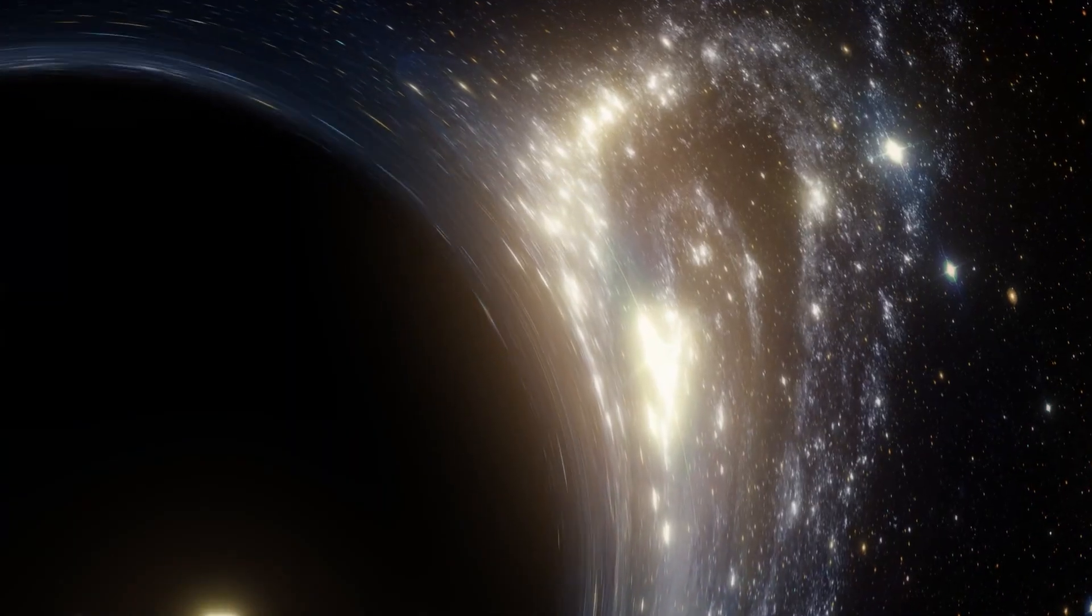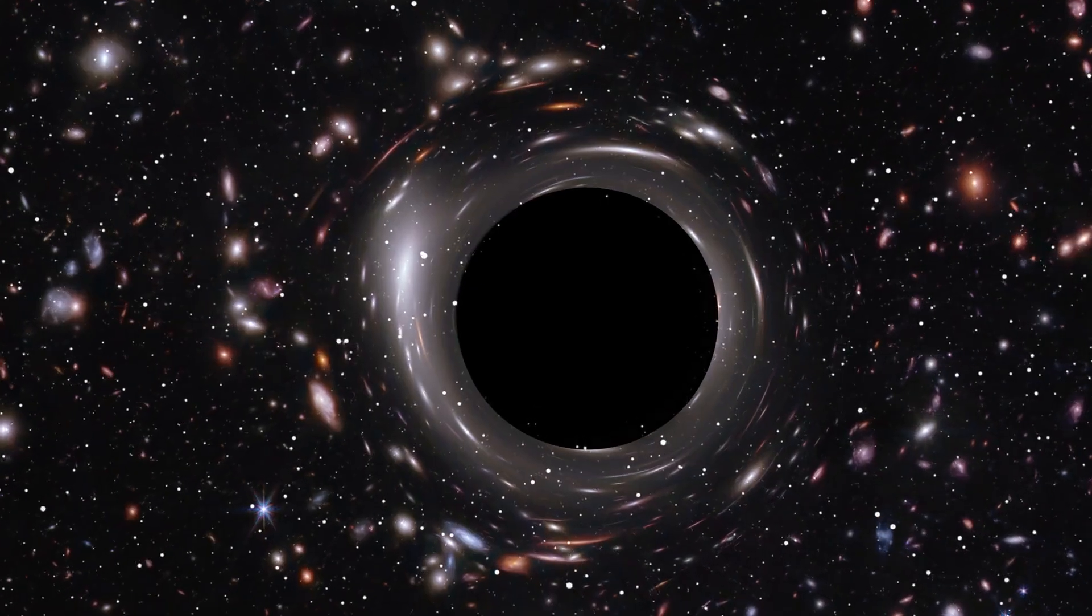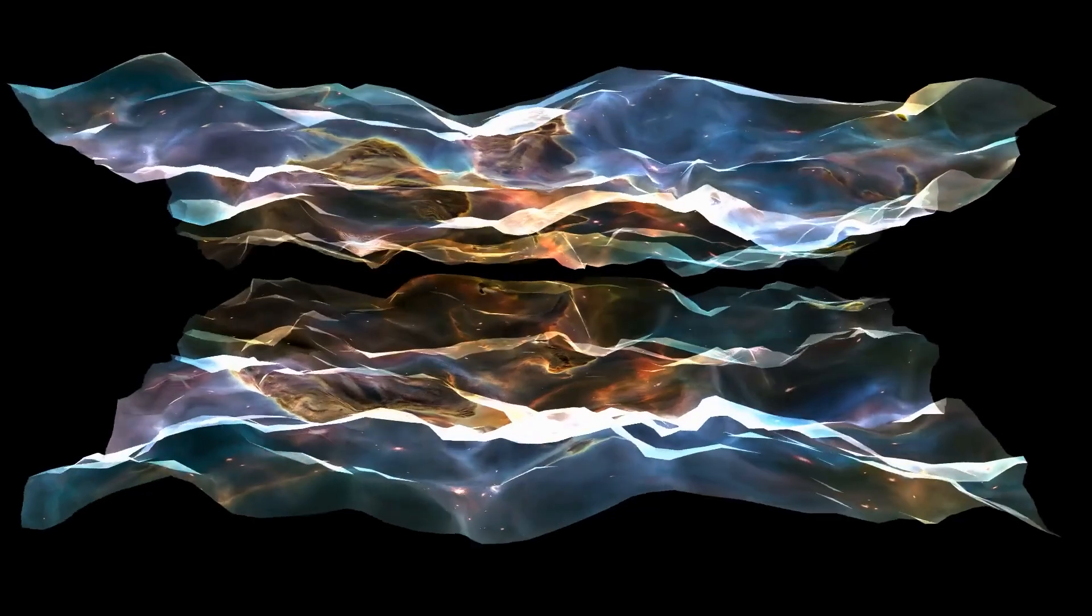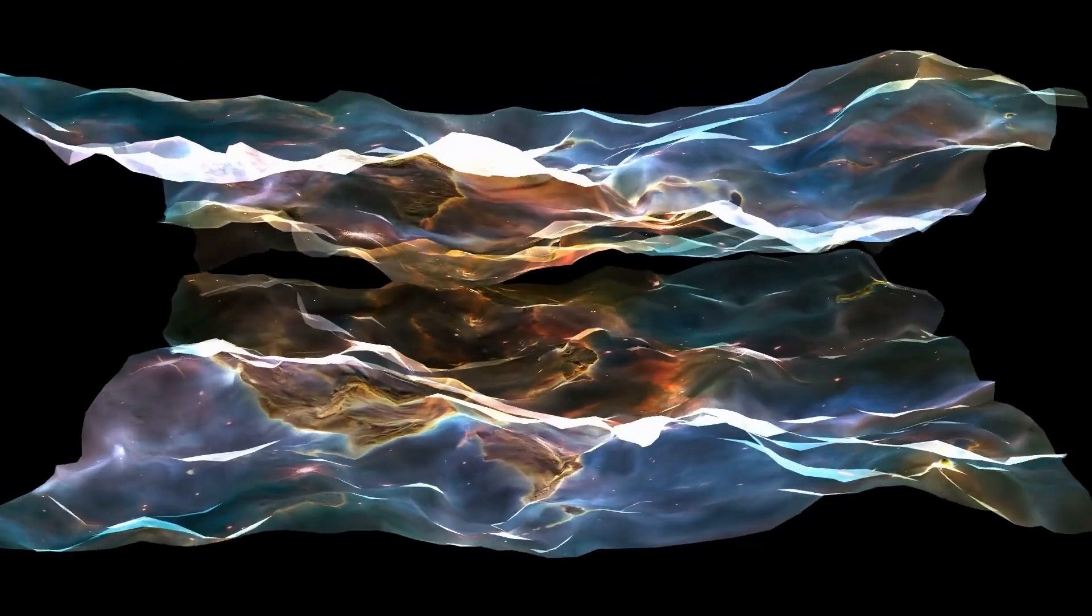Some scientists refer to this as cosmic handedness, a directional imprint present since the universe's earliest moments. If true, it would mean the universe isn't entirely symmetrical. And that symmetry, or lack of it, could hold the key to how everything was formed.